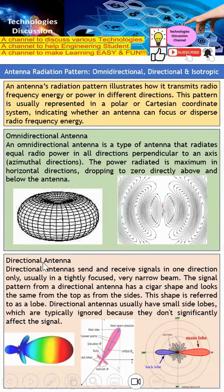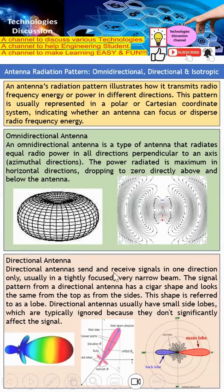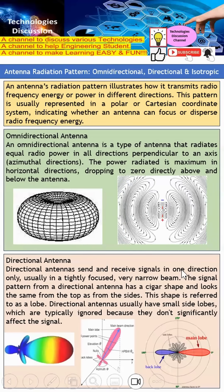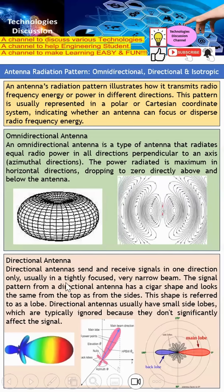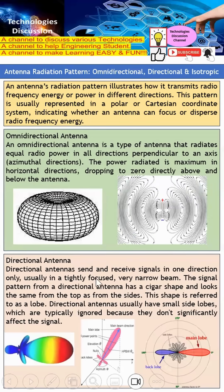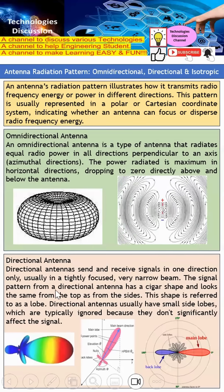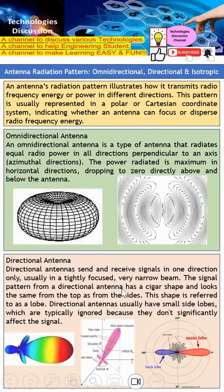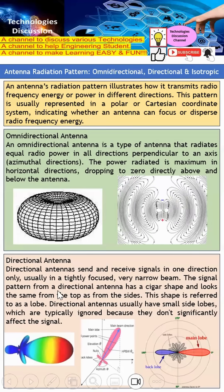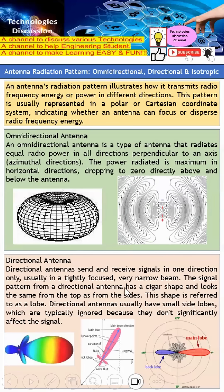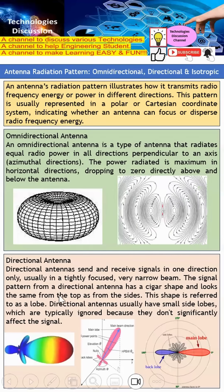A directional antenna sends and receives signals in only one direction. It is typically very tightly focused — a very narrow beam. The signal pattern from a directional antenna has a cigar shape and looks the same whether viewed from the top or from the side.